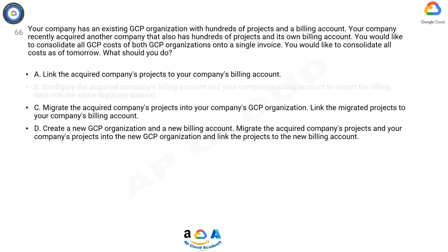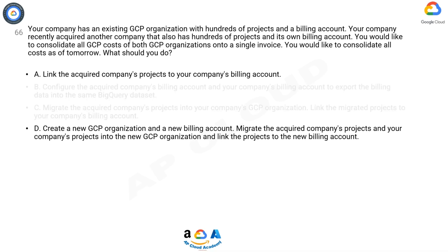The correct answer is A. Answer A would be the quickest way to consolidate all costs onto a single invoice as of tomorrow. By linking the acquired company's projects to your company's billing account, you can ensure that all costs for both GCP organizations are billed to a single billing account.